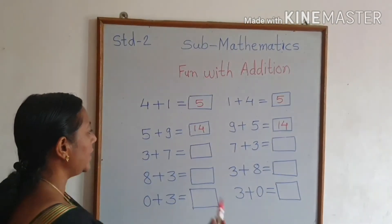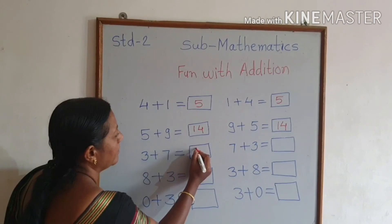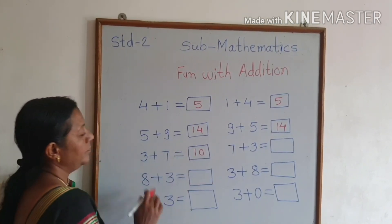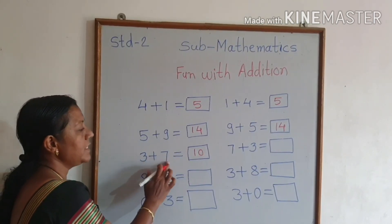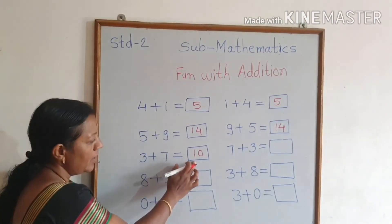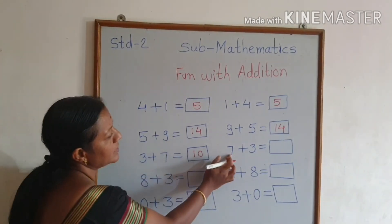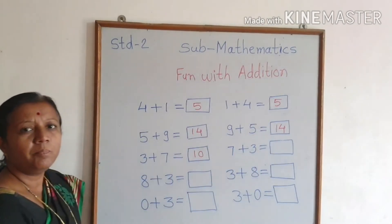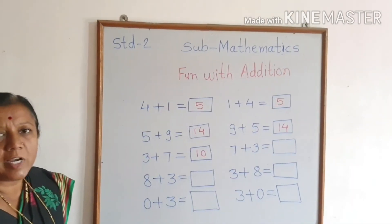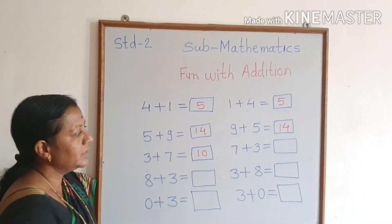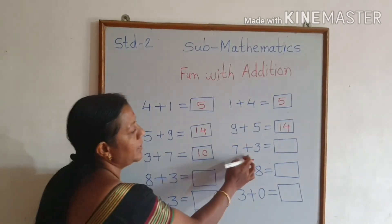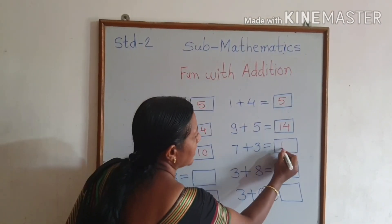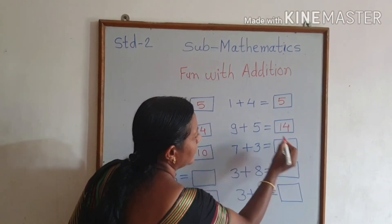Which number did we reach? 10. Now tell me, 3 plus 7 is equal to 10. Correct? Now tell me, 7 plus 3 equals how many? What is the addition? 7 plus 3 is equal to 10 also. Correct?